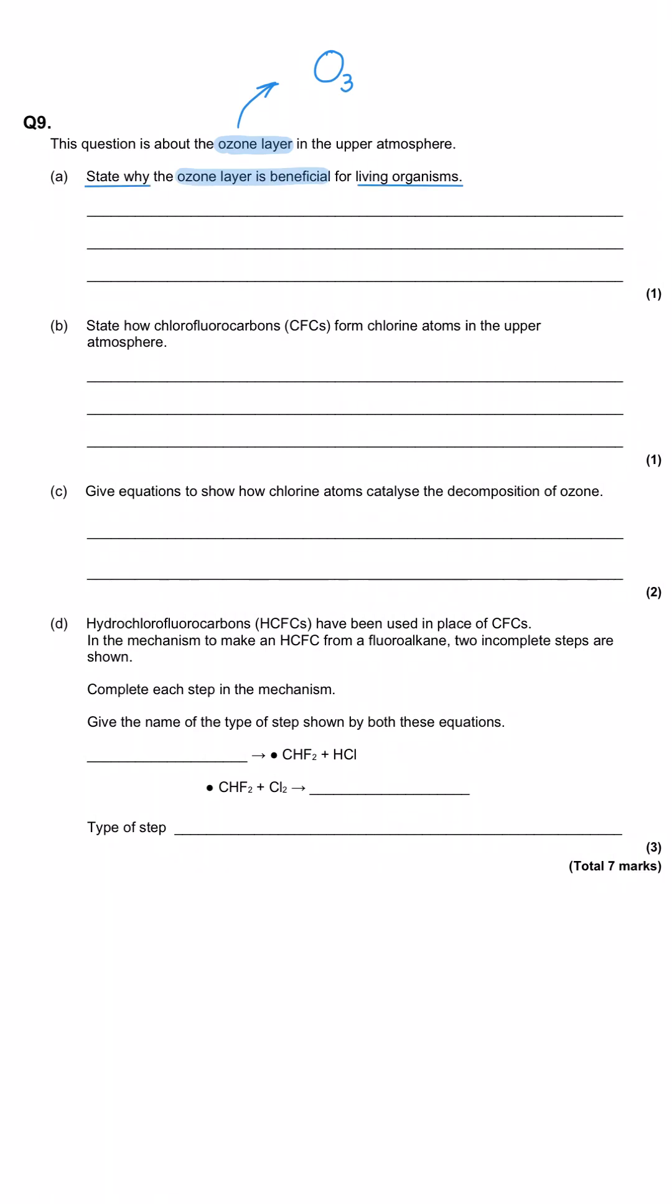Well, the ozone layer absorbs harmful ultraviolet radiation, so it prevents that ultraviolet radiation from reaching us. And as a result of that, we have a reduced risk of skin cancer that ultraviolet radiation can cause. Either of those two is fine for this answer.